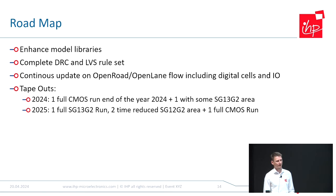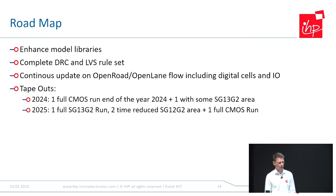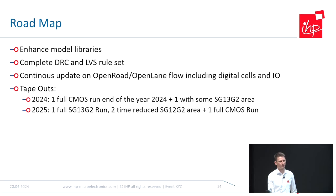Regarding the roadmap — check the current state on GitHub; it's not fully complete yet. We will enhance the model libraries, complete the DRC and LVS rule sets, and continue updating the OpenROAD and OpenLane flows, adding additional digital and IO cells. We have some planned tape-outs: this year, one full CMOS run and some additional runs with the SG13G2 technology with RF capabilities, and more runs in 2025. Check our website or GitHub for further details.